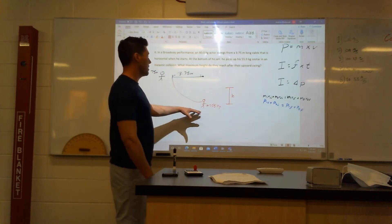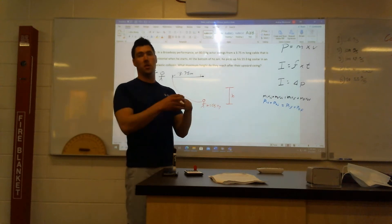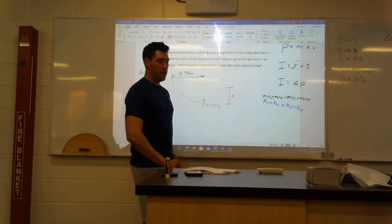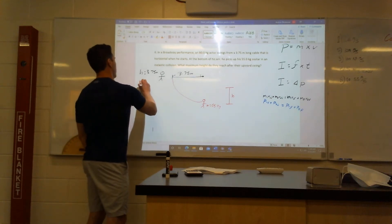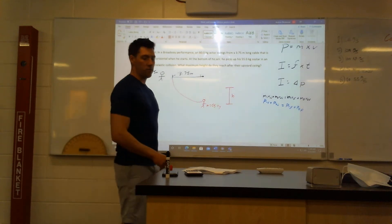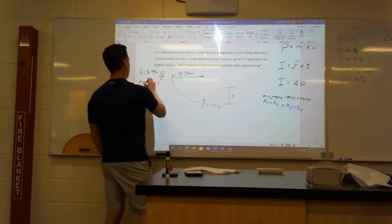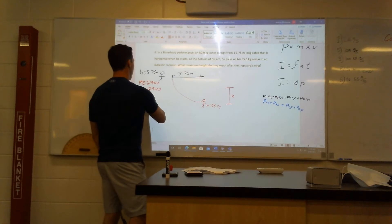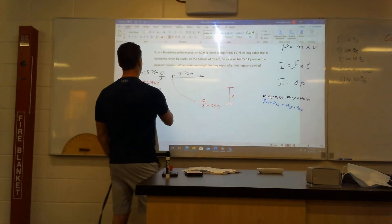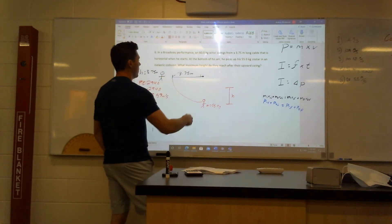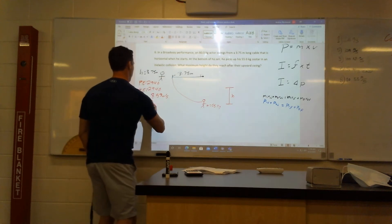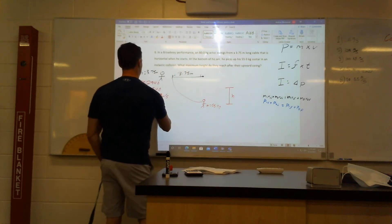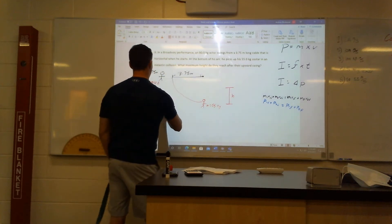The height is 3.75 meters and it's going to swing down. You could do this the kinematics way or the energy way. I prefer the energy way. Potential energy at the top is just mgh, so I get 2,940 joules, which means the kinetic energy at the bottom will also be 2,940. The velocity will be 8.57 meters per second. That's the velocity of this person alone coming down to the bottom, which means the momentum — 8.57 times 80 kilograms — is 685.6.